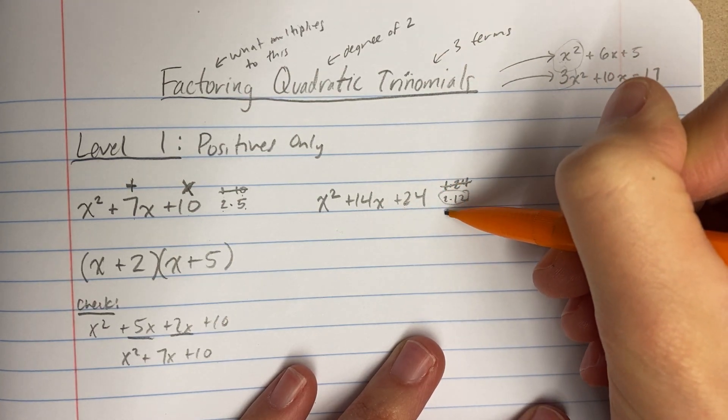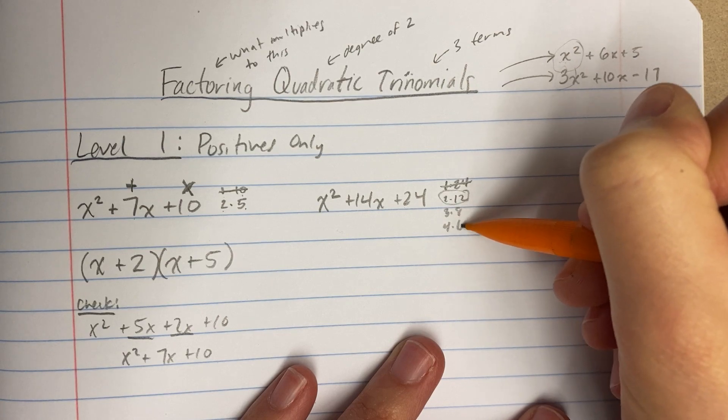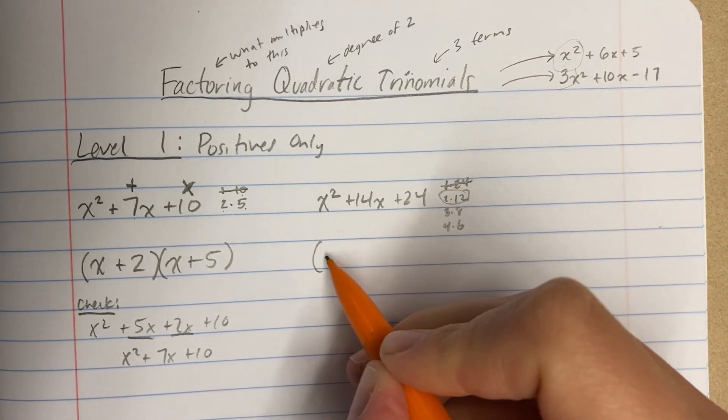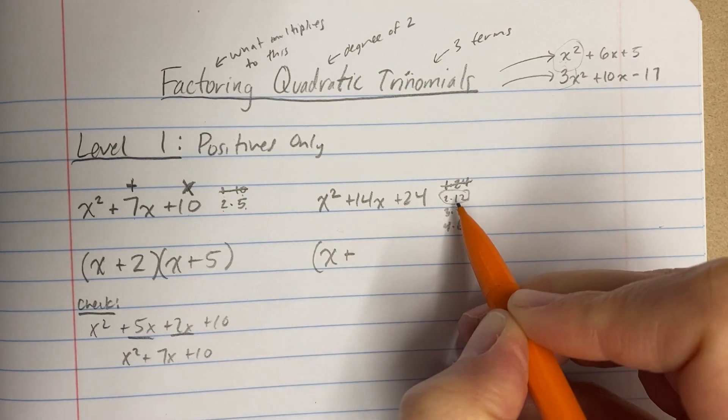Now that saves you the work of going, oh, it's 3 times 8 and it's 4 times 6. So you can kind of check as you go. That's fine. All right. But here I said, it's 2 and 12.